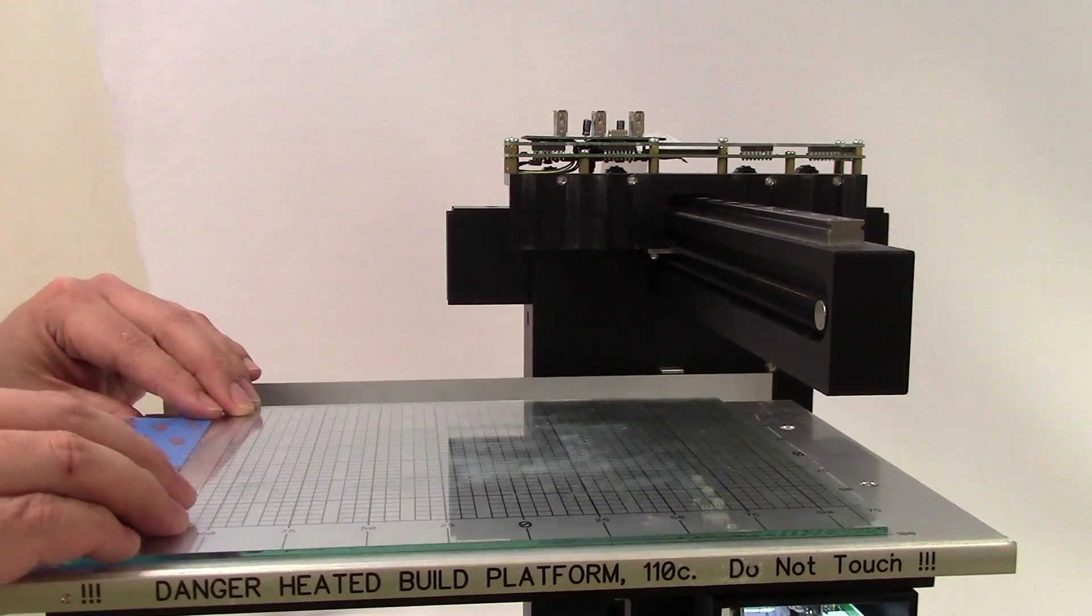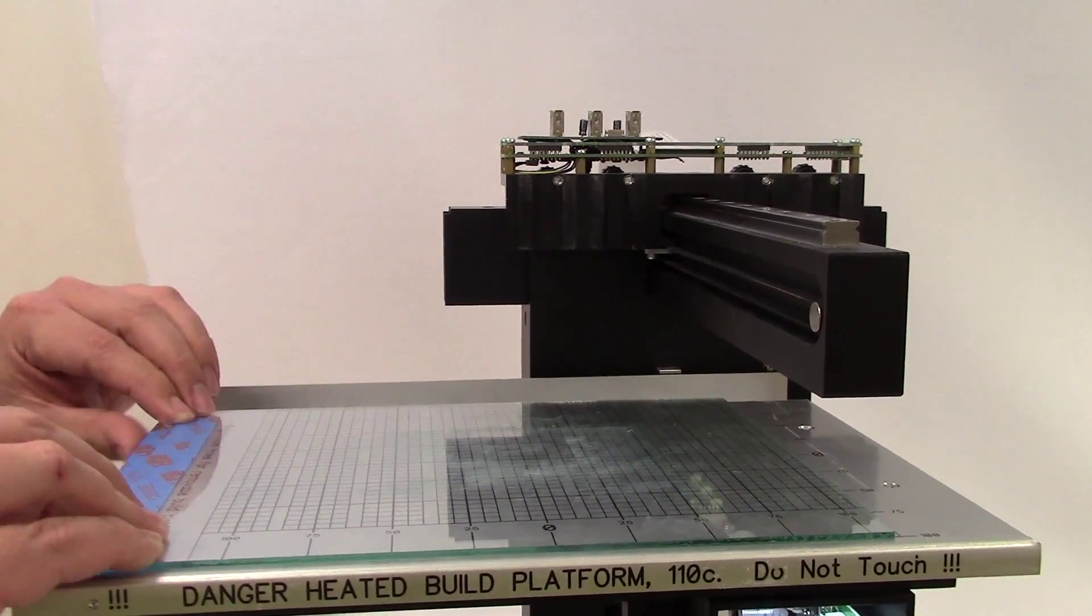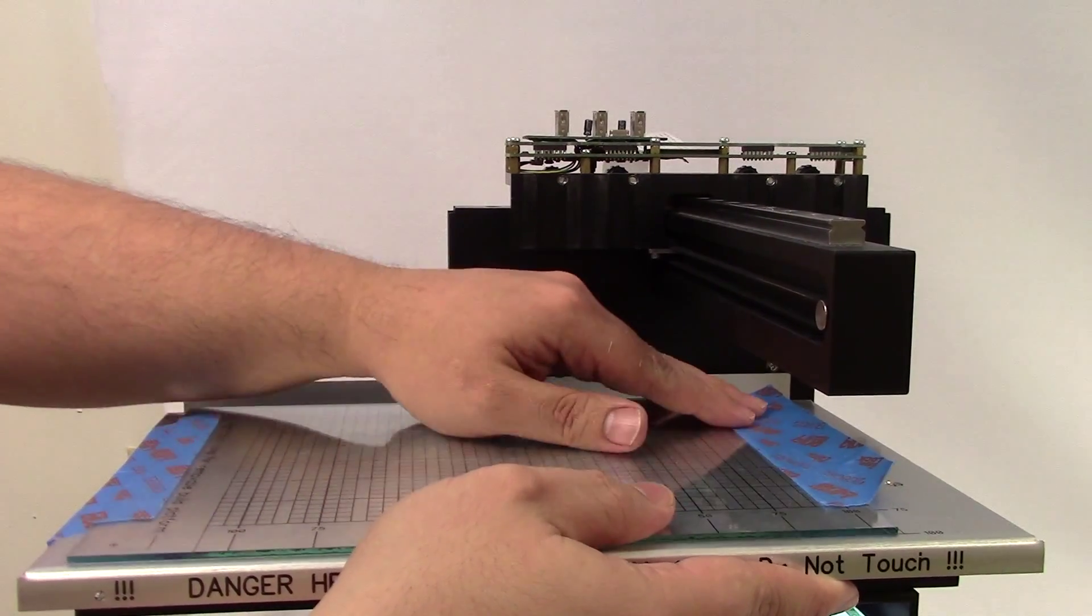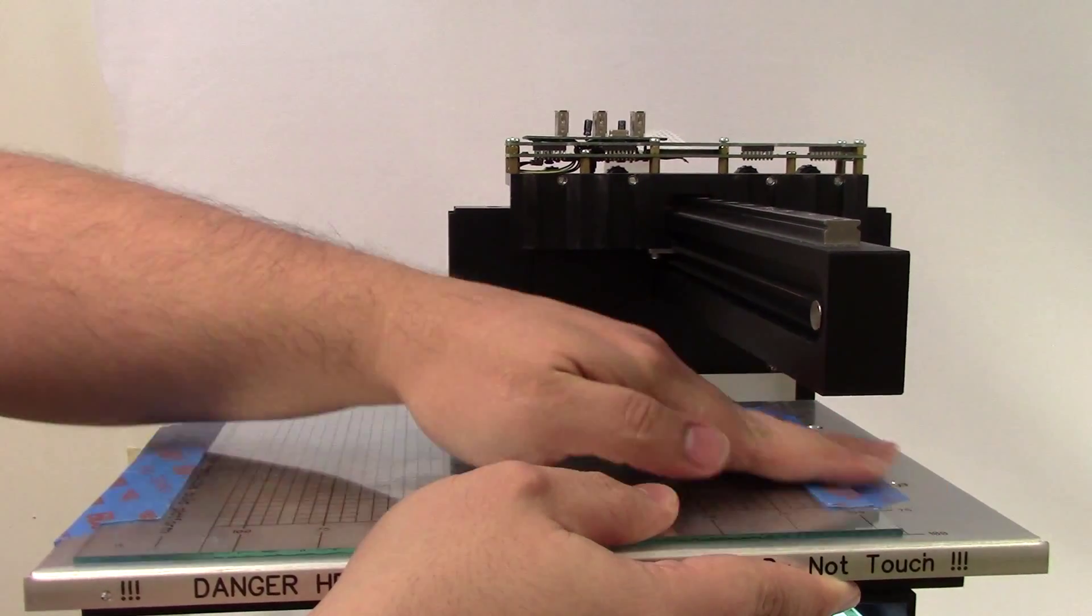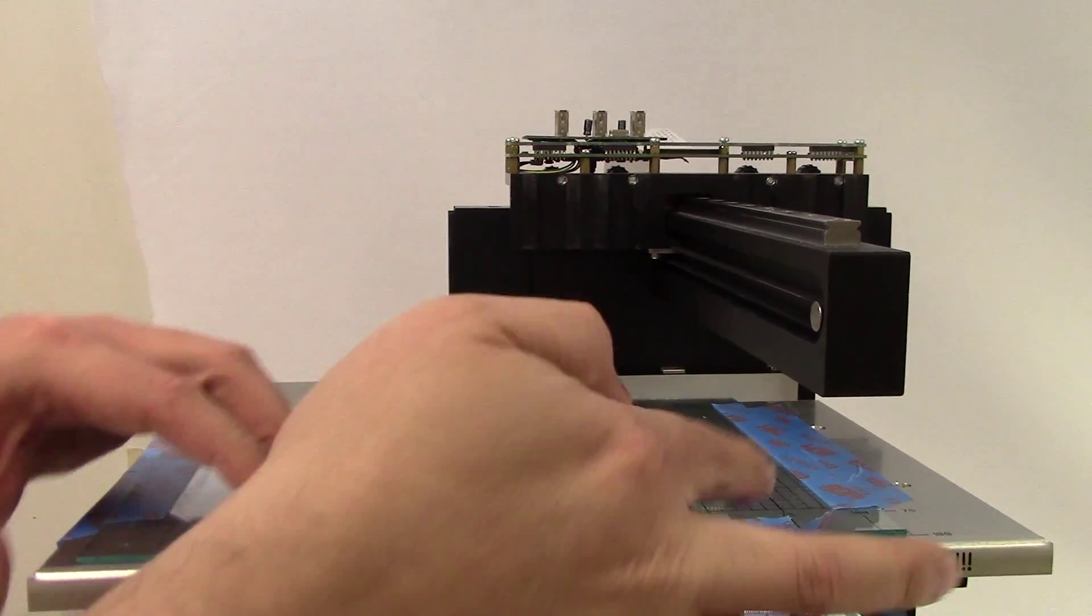To start, prepare the build platform by placing the removable build plate and securing it with your blue tape. Make sure the blue tape is creased around the edges to lock the removable build plate in place. This is necessary to prevent the removable build plate from slipping on the heated bed.